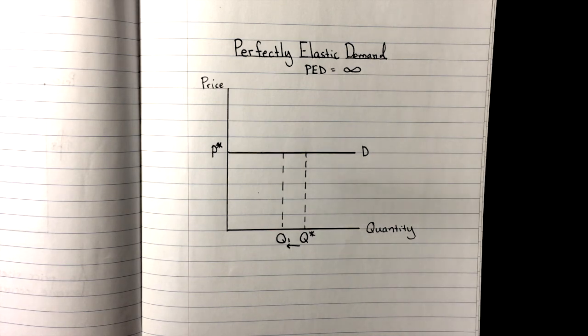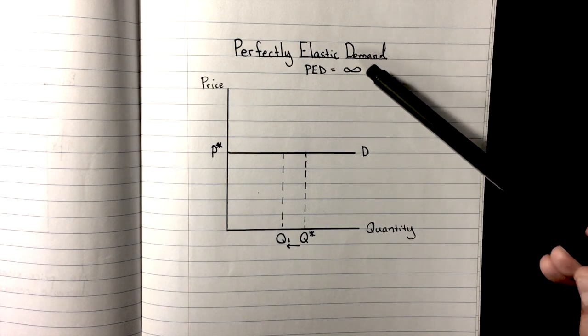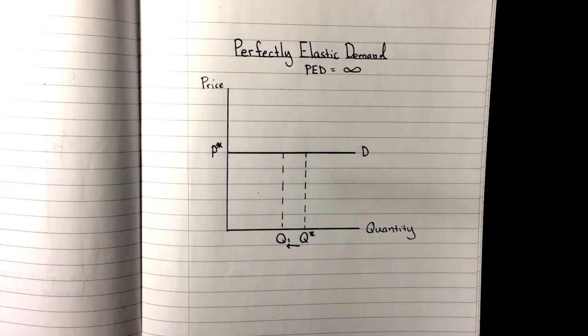In this situation, PED is equal to infinity. It's almost impossible to come up with a pure and perfect example of this. So for now what I would just tell you to do is memorize that a perfectly elastic demand curve is horizontal with a PED of infinity.